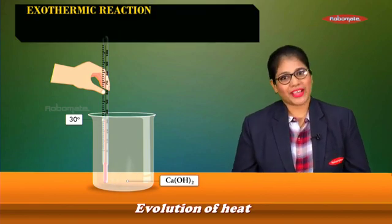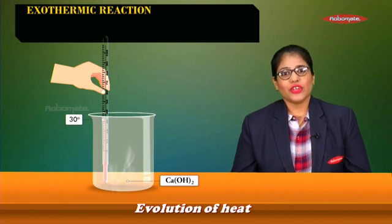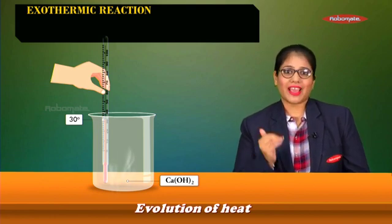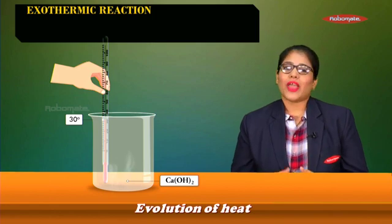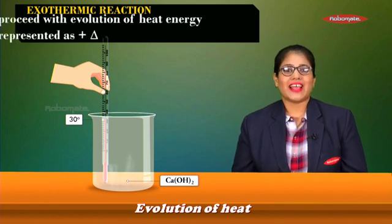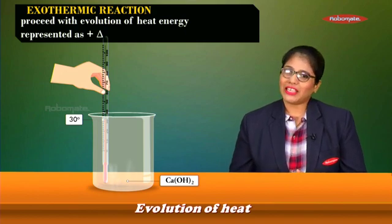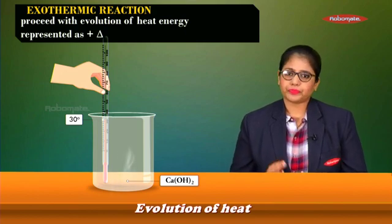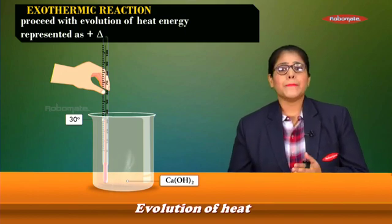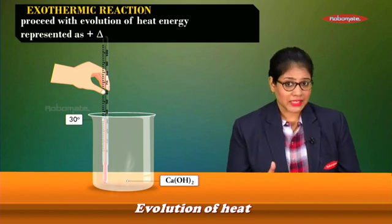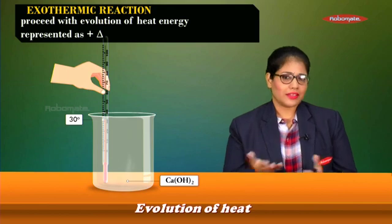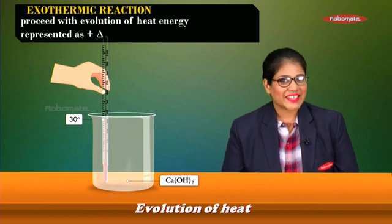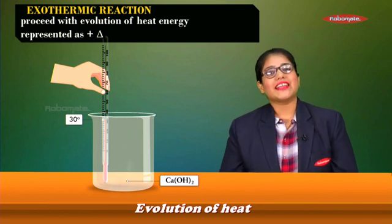Such reactions are called exothermic reactions. The name 'exo' means giving out and 'thermic' means heat. Exothermic reactions are defined as reactions that proceed with evolution of heat energy. They are represented as +Δ, where the plus sign indicates heat is given out and delta indicates it is heat that is given out.